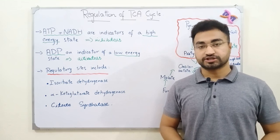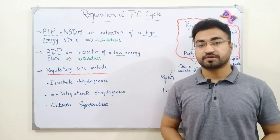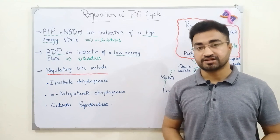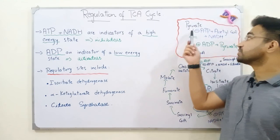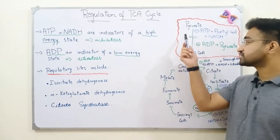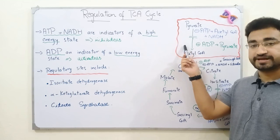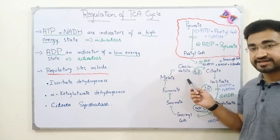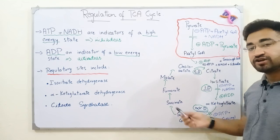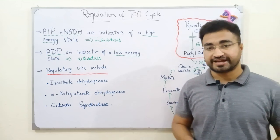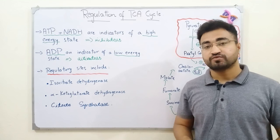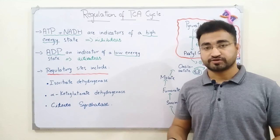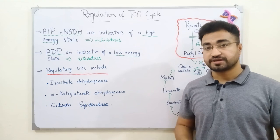Hello guys, welcome to another video lecture from IS Academia. Today we will be talking about regulation of the TCA cycle. In previous video lectures, we saw that at the end of glycolysis you get pyruvate, which is converted into acetyl coenzyme A by the PDH complex, which then enters the TCA cycle combining with oxaloacetate. At the end of the TCA cycle you get three molecules of NADH, one of FADH, and one of GTP, and these reducing equivalents enter the electron transport chain to produce ATP.